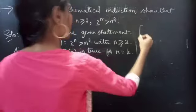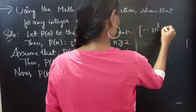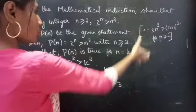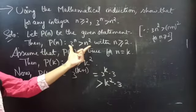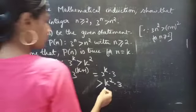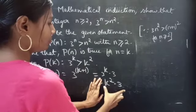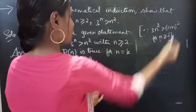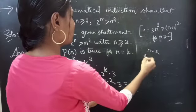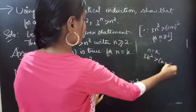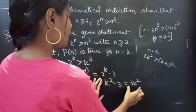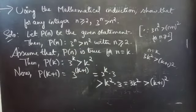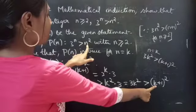We have a statement from mathematical induction that 3n² is greater than (n+1)² for n greater than or equal to 2. Using this statement, with n = k, we get 3k² > (k+1)², which is nothing but 3k² is greater than (k+1)² — which is the RHS for n = k + 1.